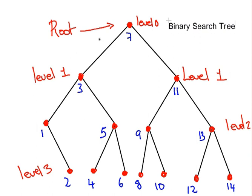The height is the maximum number of levels. So the height of this binary search tree is three because it goes down to level three. So height equals three as in the maximum number of levels.